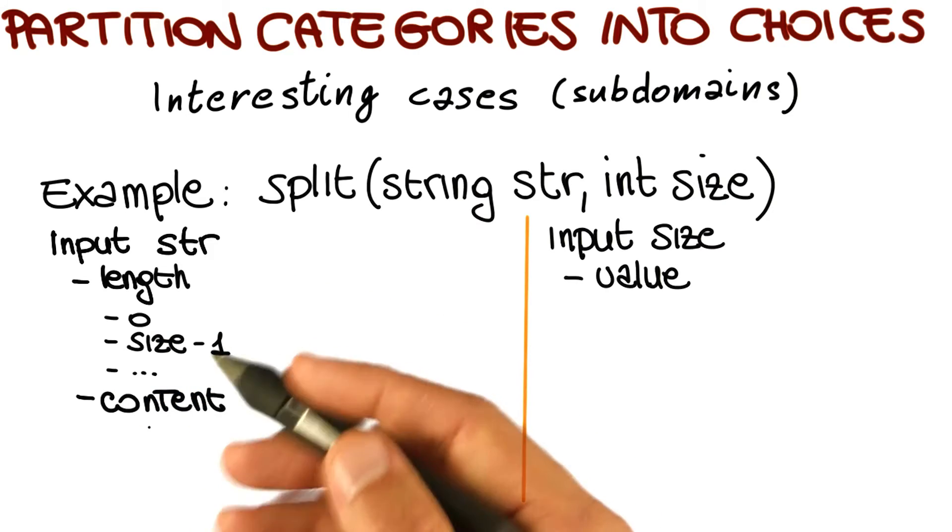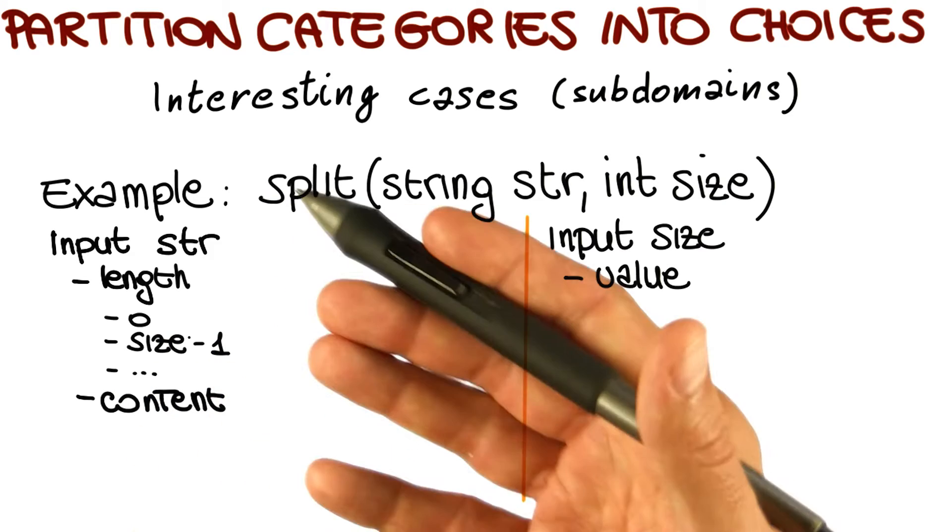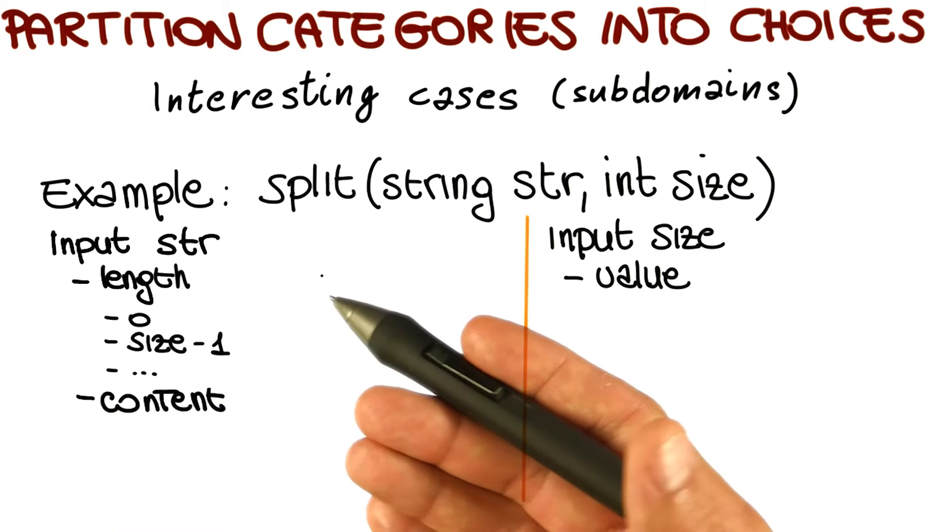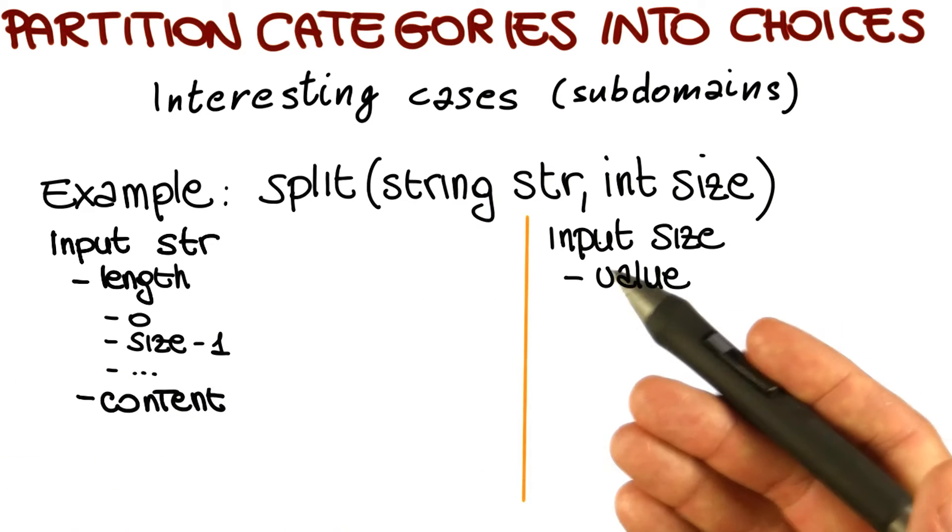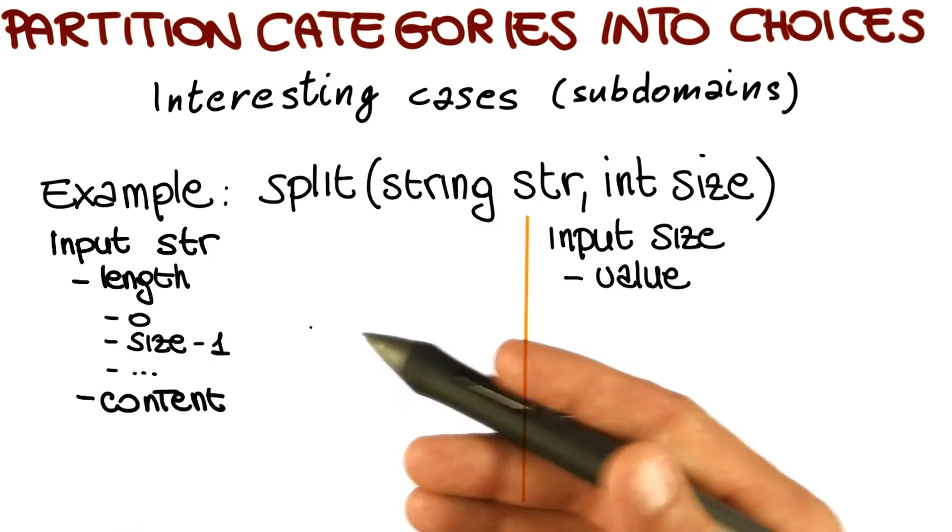We will select size, size plus one, twice the value of size, twice the value of size minus one, and so on. But even without listing all of those, I'm sure you got the idea of what it means to identify these interesting cases.